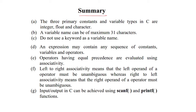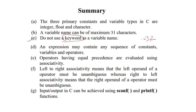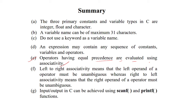Summary of today's video: First, there are three primary constants and variable types in C — integer, float, and character. Second, a variable name can be a maximum of 31 characters; this limit depends on the compiler, and in Turbo C the restriction is 31 characters. Third, do not use keywords as variable names — there are 32 keywords in C that cannot be used as variable names. Fourth, an expression may contain any sequence of constants, variables, and operators. Fifth, operators having equal precedence are evaluated using associativity.